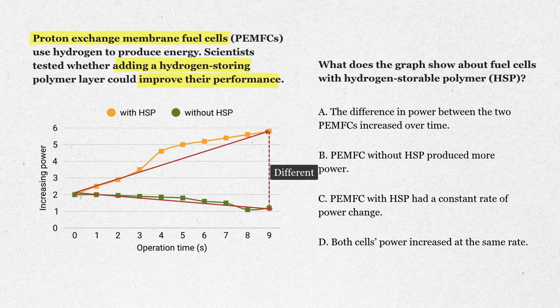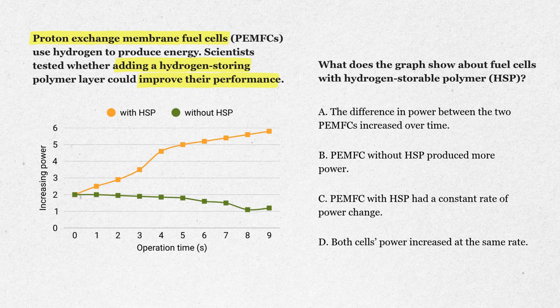Now let's test the answer choices. Option A: the difference in power between the two PEMFCs increased over time. That matches what we just saw — one goes up, one goes down, the gap widens. Keep that.